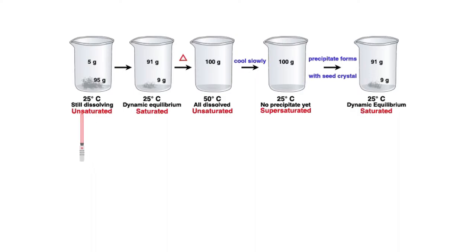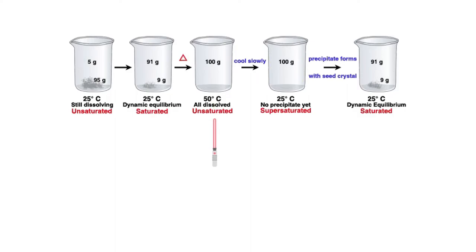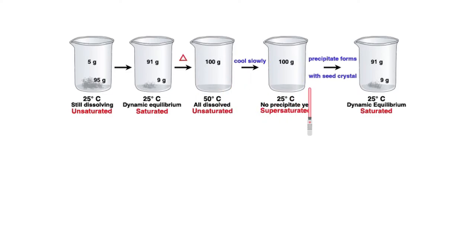Another example: at 25 degrees Celsius, you have 5 grams of solute and 95 grams of solvent — this is unsaturated and at equilibrium. At 100 grams, if you increase the temperature, it becomes unsaturated, then you cool slowly. As you cool slowly with no precipitate forming, it is supersaturated. All you did was change the temperature. Then if you add one more crystal of solute as a seed, it will precipitate out and become a saturated solution.